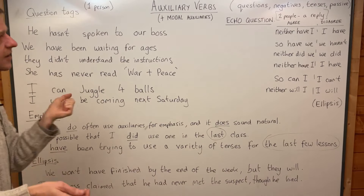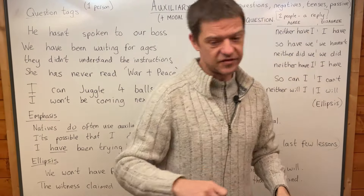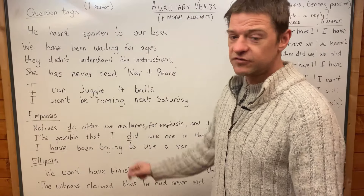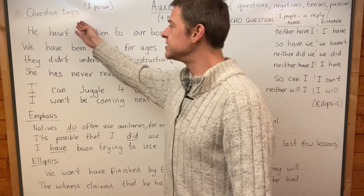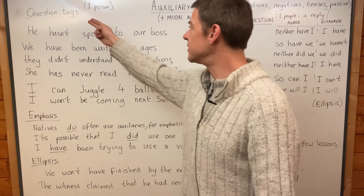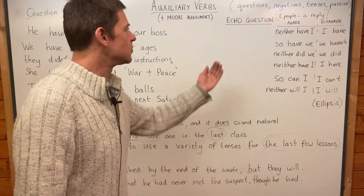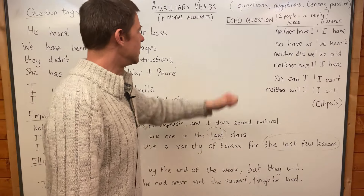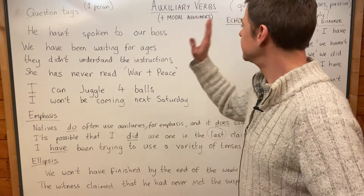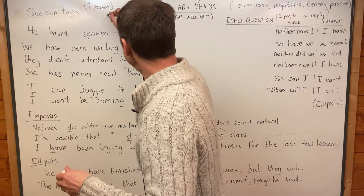There are many other reasons for using auxiliary verbs beyond those four situations. We're going to look at some other situations. We'll look at question tags last, even though I've written it on the board first. But let's start with echo questions. I want to make it clear that this is two people speaking — this is person A.